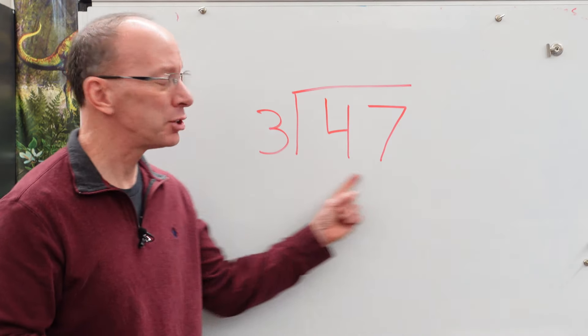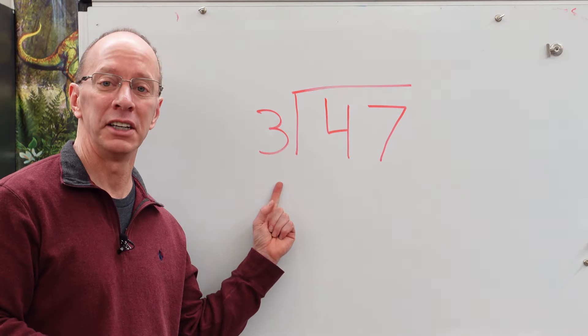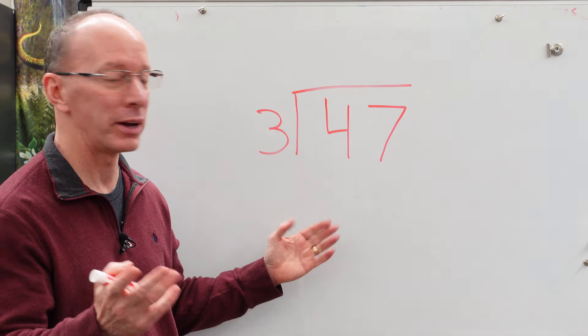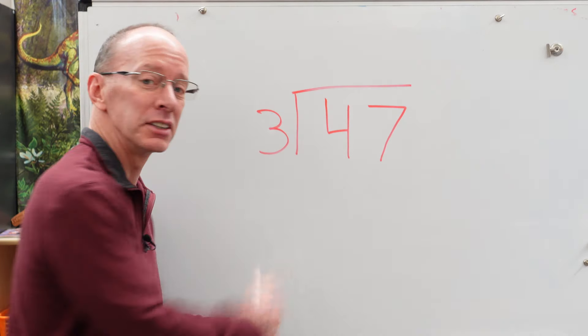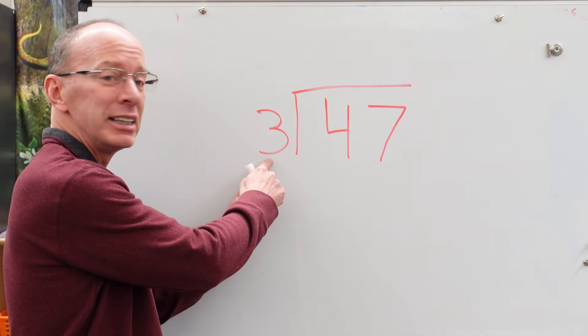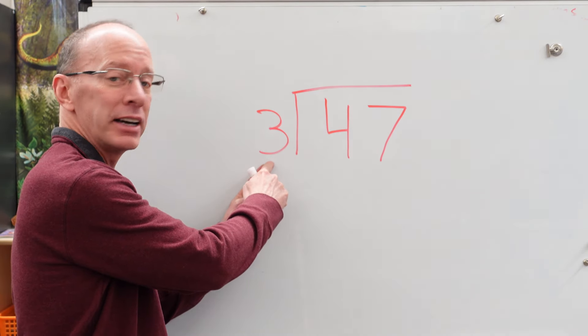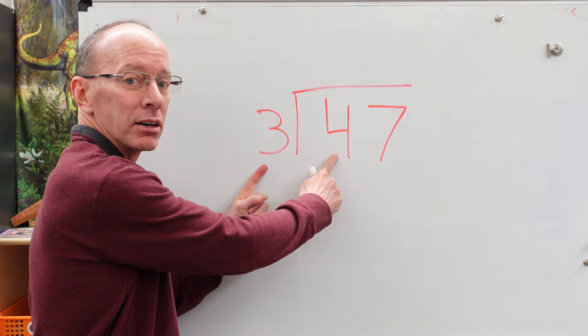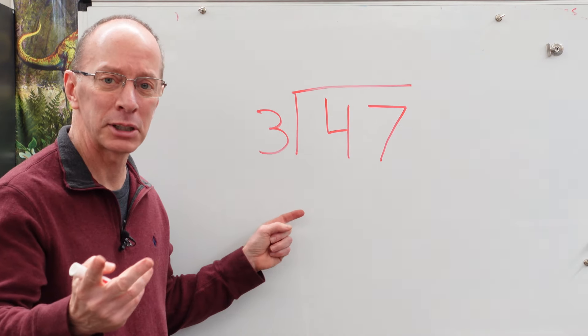We have a two-digit number divided by a one-digit number. So our first step, we work with this number right here. We want to see how many times we can take this digit, number three, and put it into this number here, our number four. So how many times could we do it?